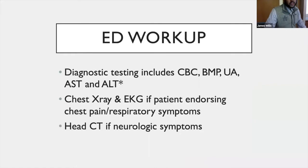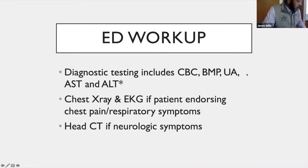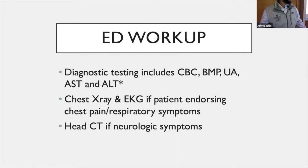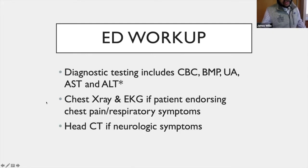If you see those signs, it warrants an ED workup. Diagnostic testing includes a CBC, BMP, and urinalysis — primarily to identify end-stage renal disease, renal failure, anemia from chronic renal disease, or hemolytic uremic syndrome. Hypertensive urgency also warrants a workup and primary care follow-up, but if the patient is symptomatic, treat immediately. For patients endorsing chest pain or respiratory symptoms, get a chest X-ray and EKG; if there are neurologic symptoms, a head CT is warranted.